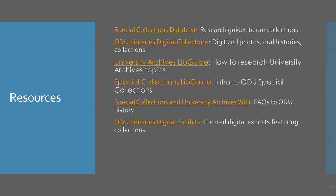Finally, here's a list of resources for more information about the archives department and our holdings here at Old Dominion University. The first is our special collections database, which contains finding aids or research guides that help you find more information about our collections. We also have our digital collections, which feature digitized photos, oral histories, and other digitized materials from our holdings. We have the University Archives LibGuide, which helps you find research topics related to university history, and the Special Collections LibGuide, which introduces you to ODU special collections and our services. It also features our wiki page with frequently asked questions related to ODU history, and we have curated digital exhibits featuring images and digitized versions of our holdings.